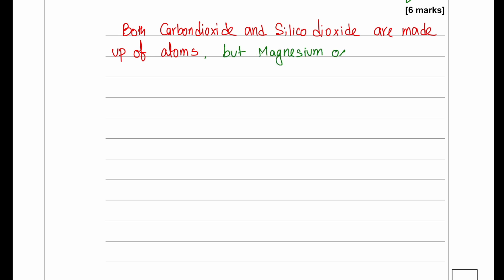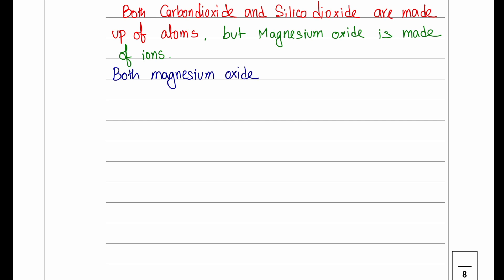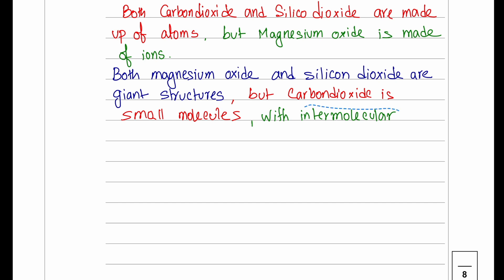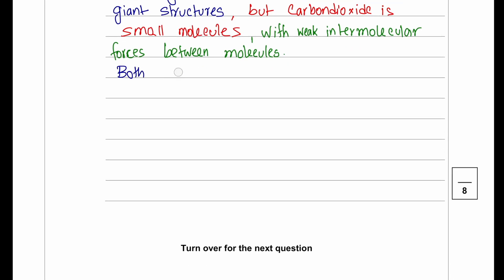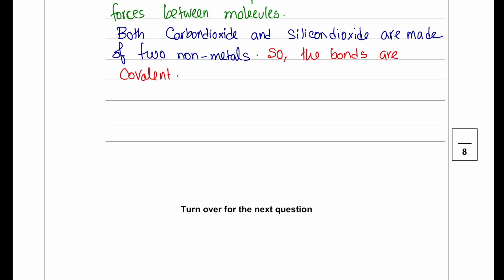Carbon dioxide and silicon dioxide are covalently bonded by sharing of electrons between atoms. Magnesium oxide is formed from a metal and a non-metal, so the bonds are ionic and two electrons are transferred. We can also say that magnesium oxide and silicon dioxide are macromolecular giant structures, whereas carbon dioxide is a simple molecule. Carbon dioxide will have intermolecular forces between the molecules. These points will cover up the six marks.